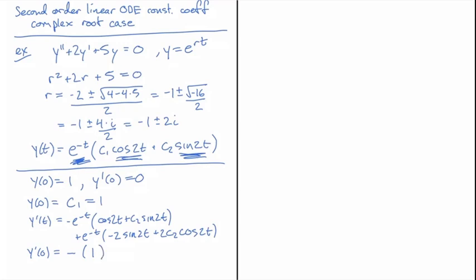So that's all we get here. And then plus e to the 0 is 1. And then in brackets we get minus 2 times 0, plus 2c2. So I have 2c2 times cosine of 0 is 1. So we're left with this.